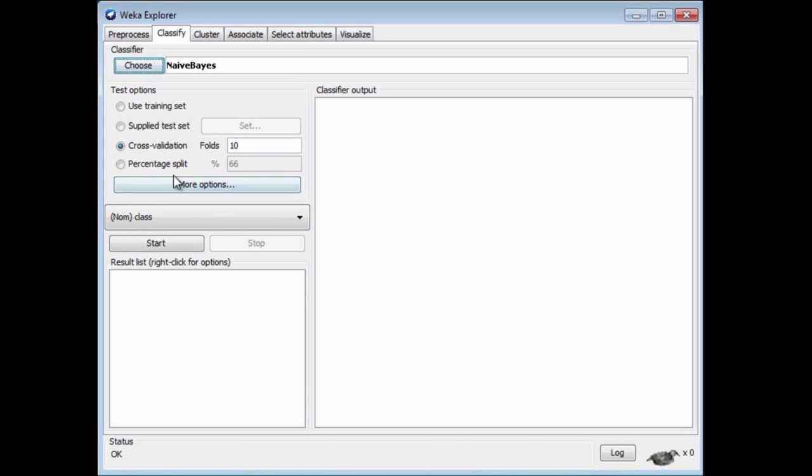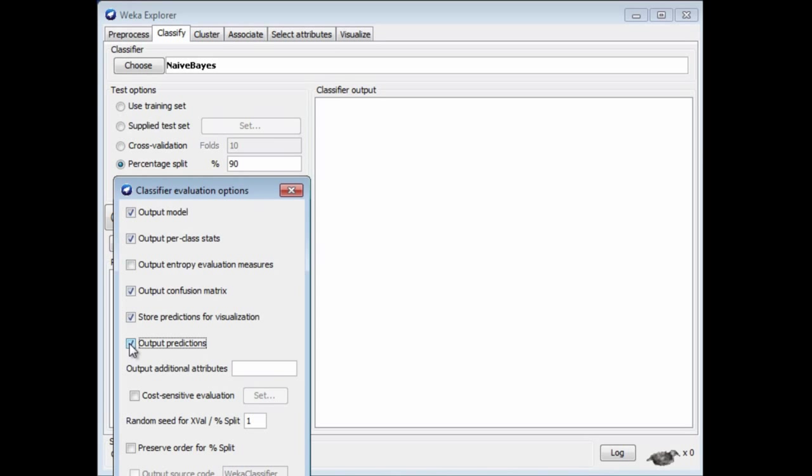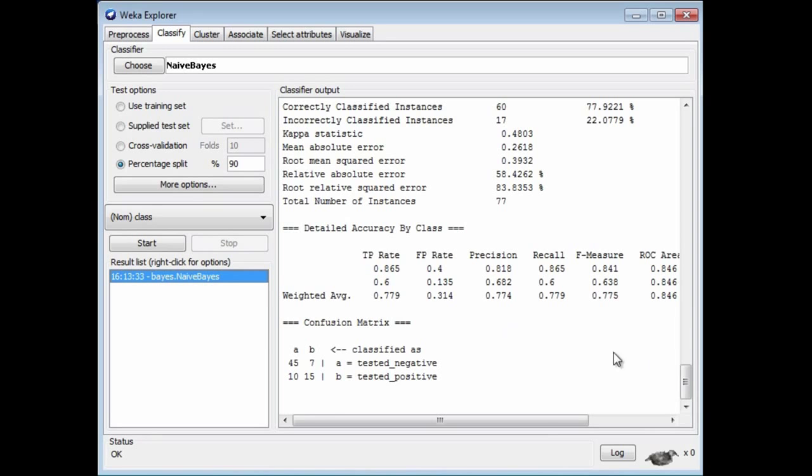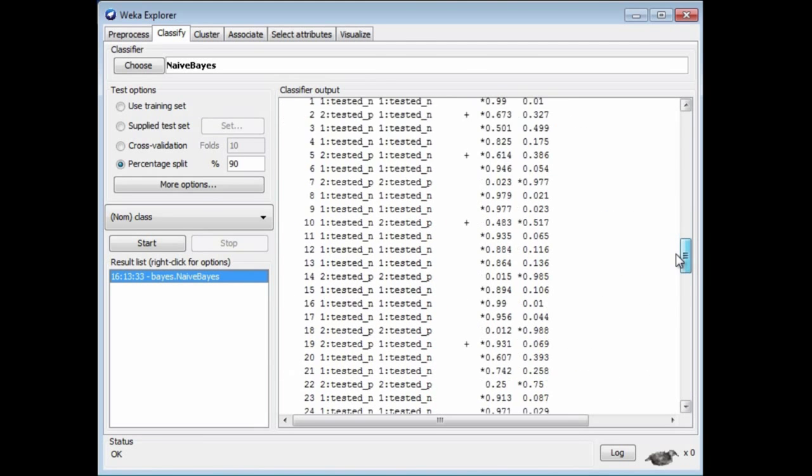I'm going to use a percentage split of 90%, so that leaves 10% as the test set. Then I'm going to output the predictions on that 10% and run it. What I get here, I want to look at the predictions that have been output.